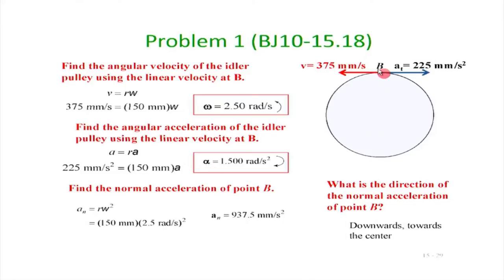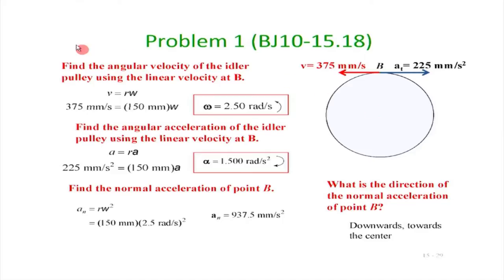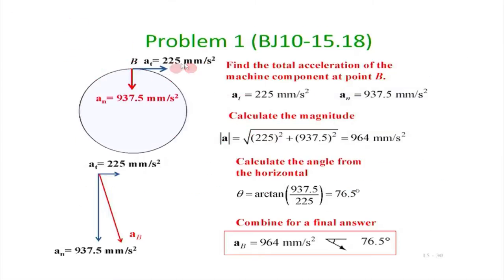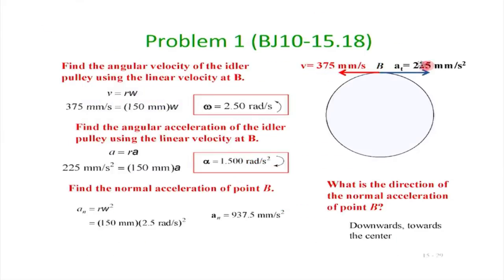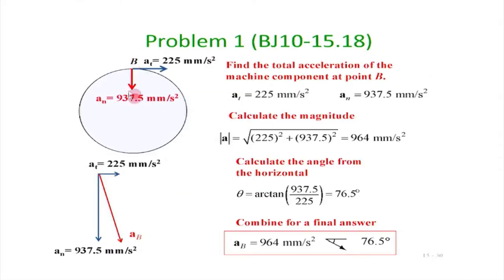So we know omega and we know alpha. Now what we want to find out is the components of acceleration for point B on the pulley. Point B has a tangential velocity, but the velocity also changes direction because point B moves along a circle — the only difference is that the angular velocity is not constant, there is also acceleration. So the normal component of acceleration at point B is r·omega squared downward, and the tangential component A_t is equal to 225 millimeters per second squared, which is given to us.